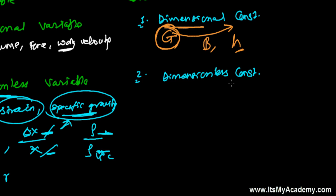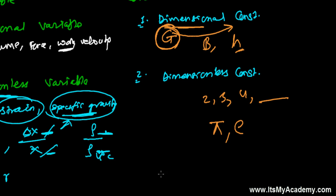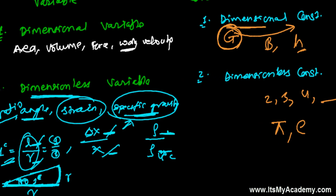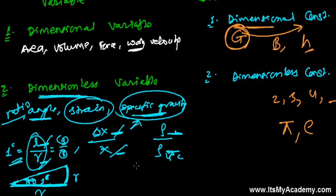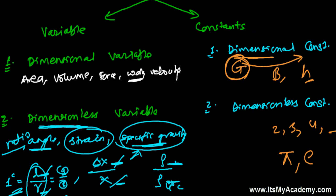And there are some dimensionless constants — like the numbers 2, 3, 4, and mathematical constants like pi and Euler's number. Their value is constant and they do not have any dimension or unit. So, viewed through the lens of dimension, we have four types of quantities: dimensional variable, dimensionless variable, dimensional constant, and dimensionless constant.